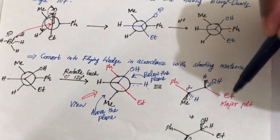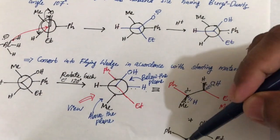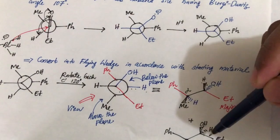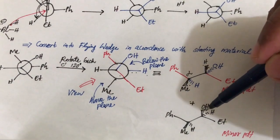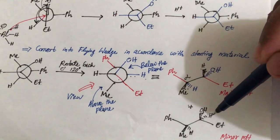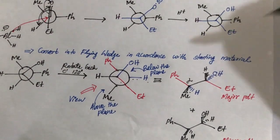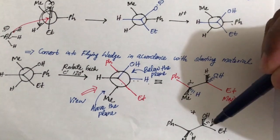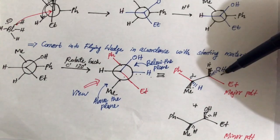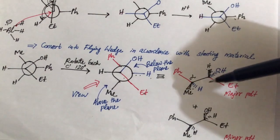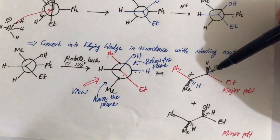According to the Felkin-Anh model, this is our major product. There is another option where the stereochemistry at the carbonyl carbon is different — the alpha carbon stereochemistry is retained but the newly formed carbon changes. In that minor product, the nucleophilic hydrogen is in dash, meaning nucleophilic attack occurred below the plane of paper. According to the Felkin-Anh model, the major product has nucleophilic attack above the plane of paper.